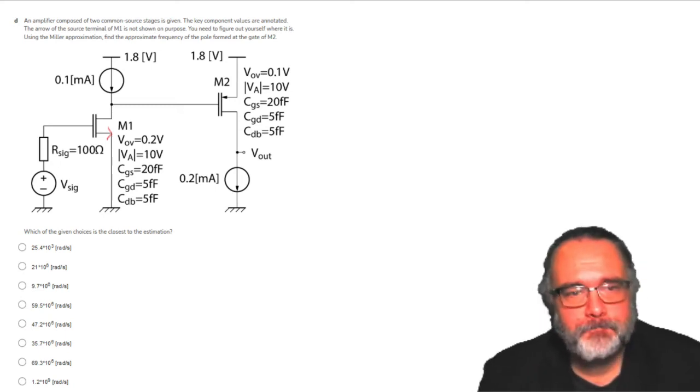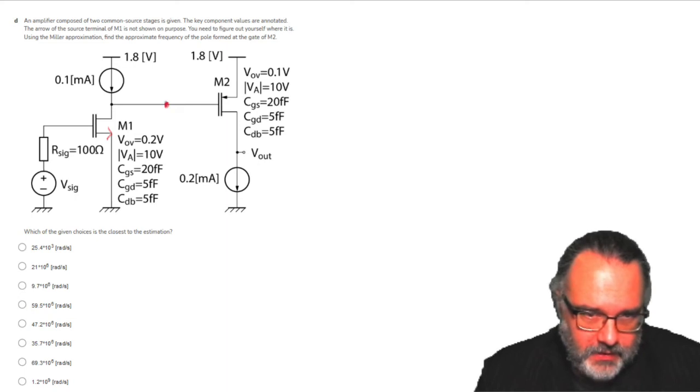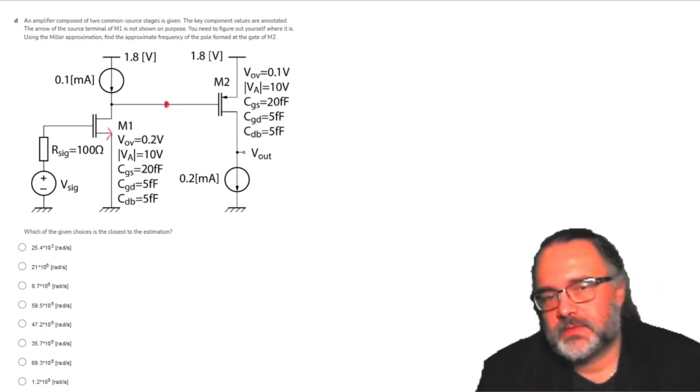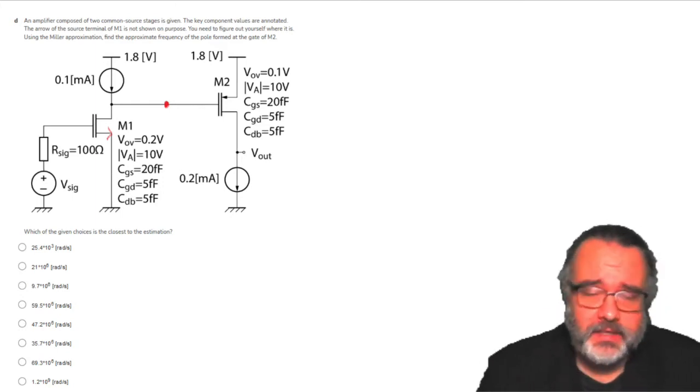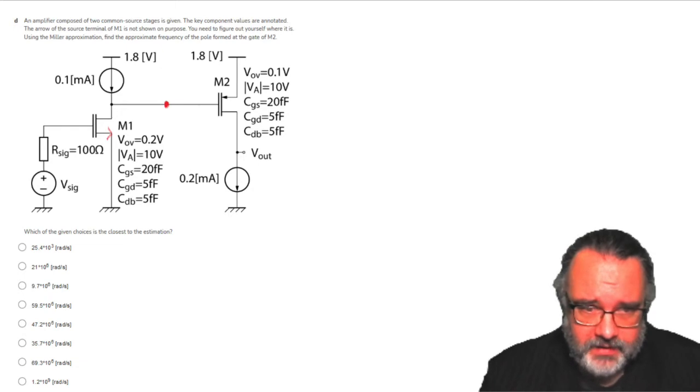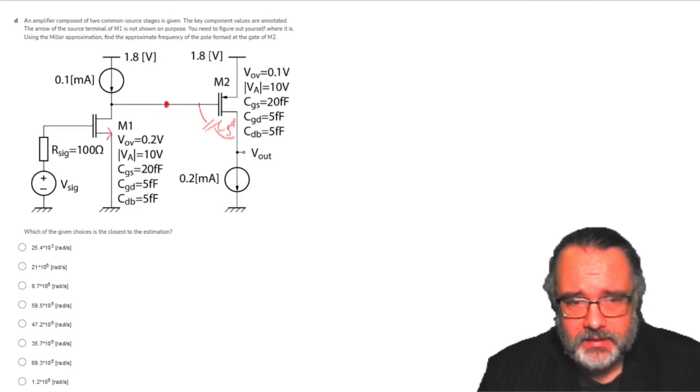So the arrow is here. Using the Miller approximation, find the approximate frequency of the pole formed at the gate of M2. This pole is expected to be the lowest frequency pole because there is a very strong Miller effect here for this capacitance C gate drain. Which of the given choices is closest to your approximation?